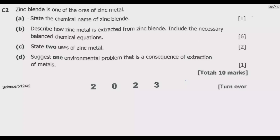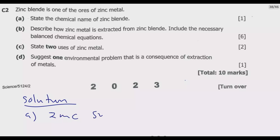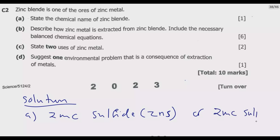Question A: we are asked to give the chemical name of zinc blende. The chemical name of zinc blende is zinc sulfide, written as ZnS. This is the chemical name — you can write it as zinc sulfide depending on preference, but the name remains the same.